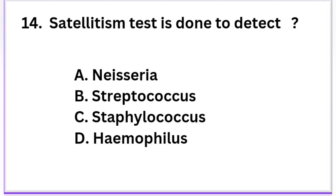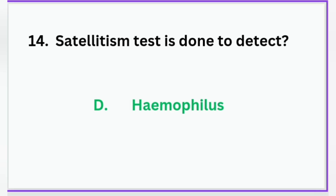Satellitism test is done to detect which of these bacteria? Option A: Neisseria, Option B: Streptococcus, Option C: Staphylococcus, Option D: Haemophilus. The correct answer is Option D — Haemophilus.